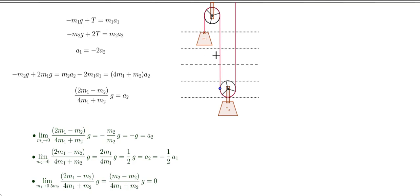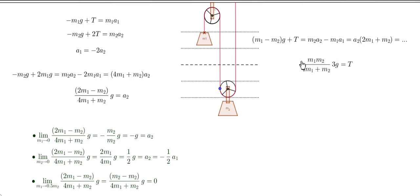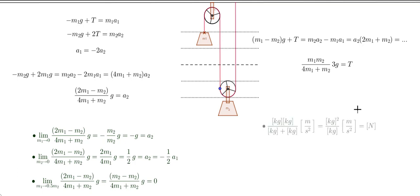Now let's find the tension T as a function of the masses. We isolate T by subtracting the equations: 2T − T = T, and solving the remaining terms. After the algebra, the result is: T = 3M1M2 / (4M1 + M2) · g. To verify, let's check the units: (kg · kg) / kg · (m/s²) = kg · m/s² = newtons. The units work out correctly.